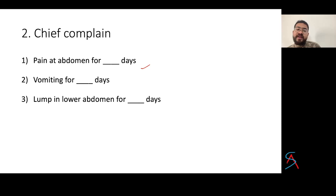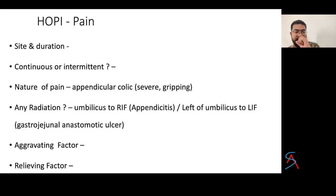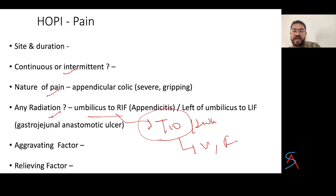The chief complaint should be recorded in the patient's language — for example, pain in the abdomen for these many days, vomiting, or lump, in chronological order. In history of presenting illness, the patient was apparently well and then started having abdominal pain. Elaborate each symptom: site, duration, continuous or intermittent, nature, and radiation. In appendicitis, pain starts at the umbilicus then radiates to the right iliac fossa due to deployment from T10 level and shift from visceral to parietal peritoneum, associated with vomiting, fever, and later a lump.